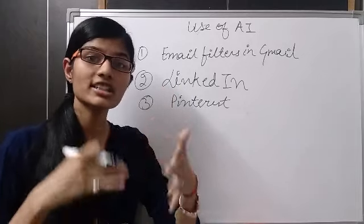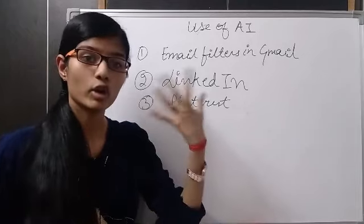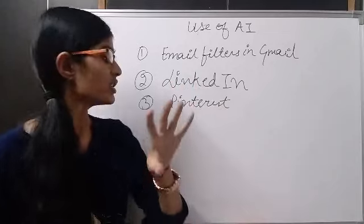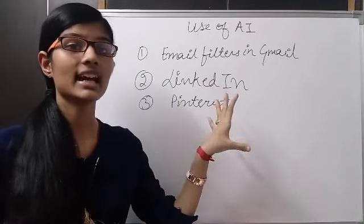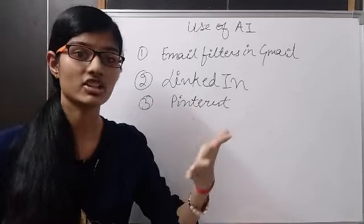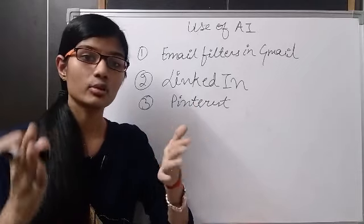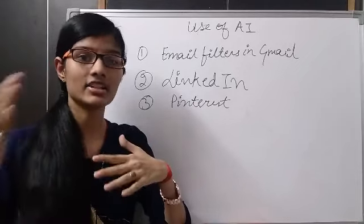So you can just open Pinterest and with the help of your lens you can scan that and it will show you similar products of whatever your likings. So basically AI is helping Pinterest by showing you suggestions based on your requirements.